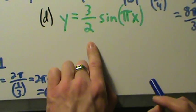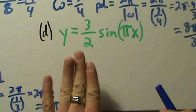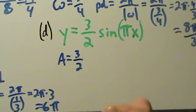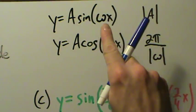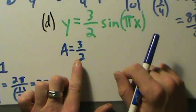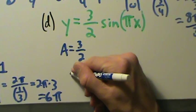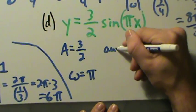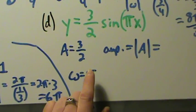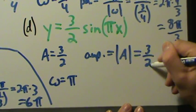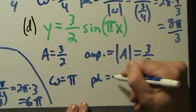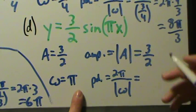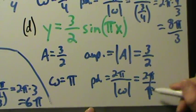Last one: y equals three-halves times the sine of πx. We don't need to rewrite this — everything's nicely laid out. A is three-halves, and omega is π. The amplitude is the absolute value of A, which is already positive, so it's just three-halves. The period is 2π over the absolute value of omega. Omega is already positive — it's just π — so this is 2π divided by π. The π's cancel, and we're left with just 2.